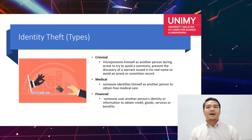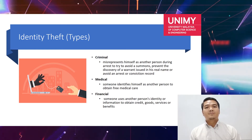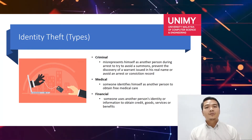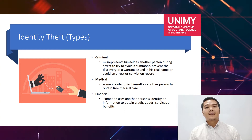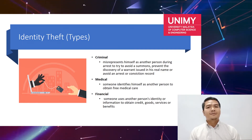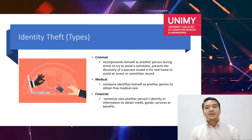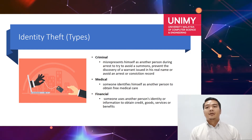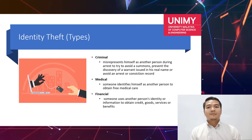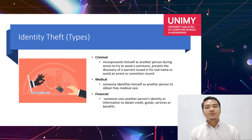There are several types of identity theft. First is criminal identity theft, where a criminal misrepresents himself as another person during arrest to avoid a summons, prevent discovery of a warrant issued in his real name, or avoid an arrest or conviction record. Second is medical, where someone identifies as another person to obtain free medical care. Third is financial, where someone uses another person's identity or information to obtain credit, goods, services or benefits.